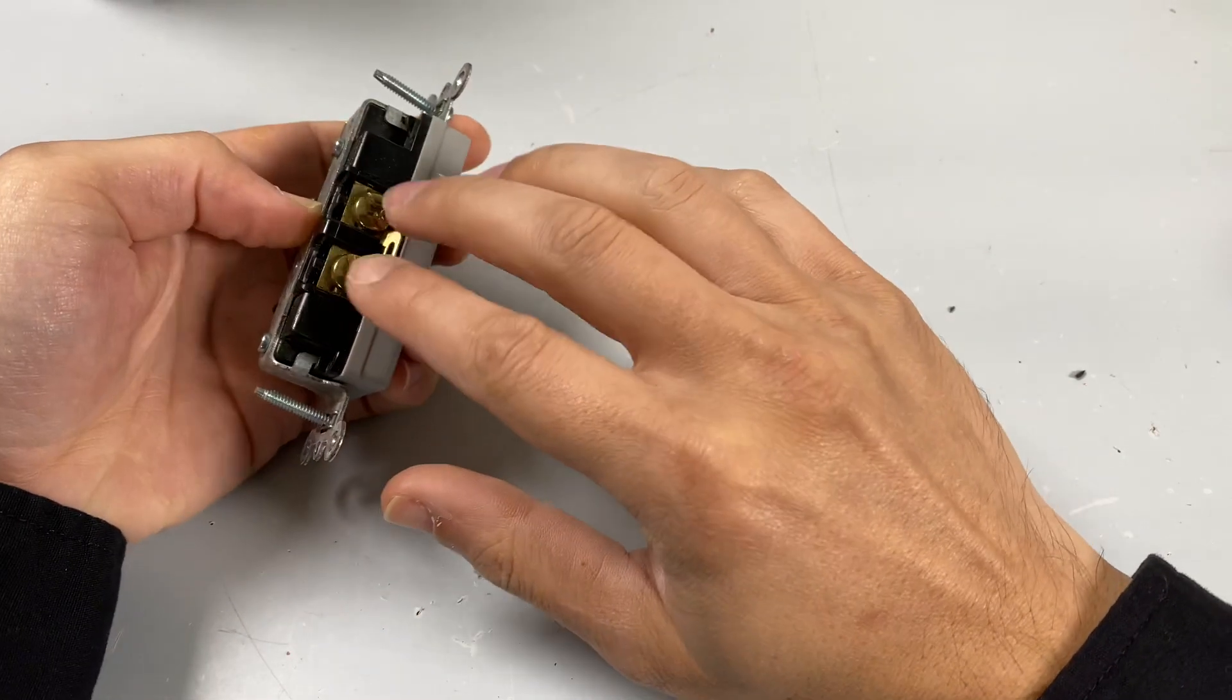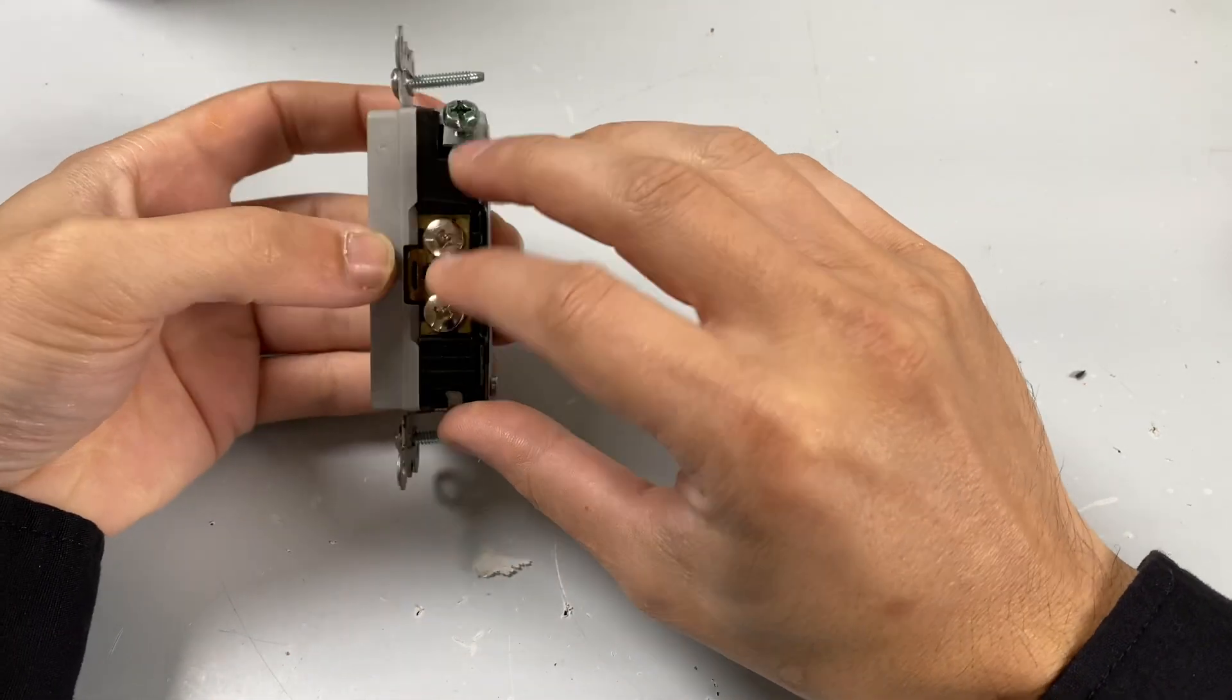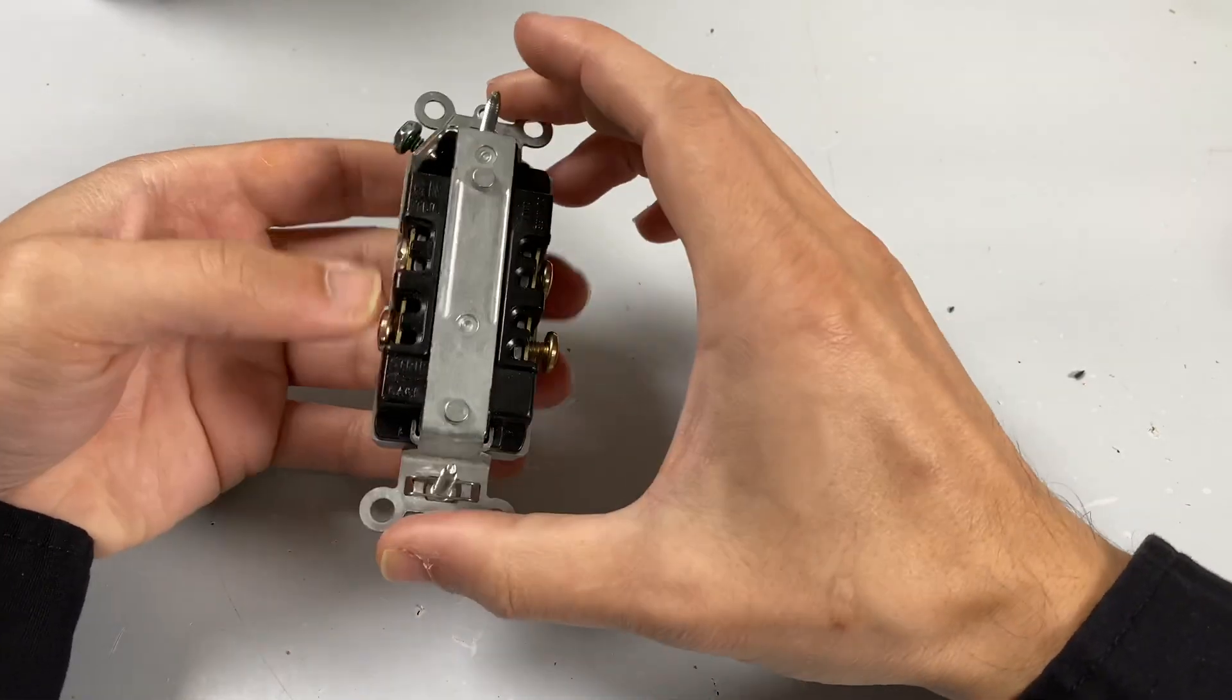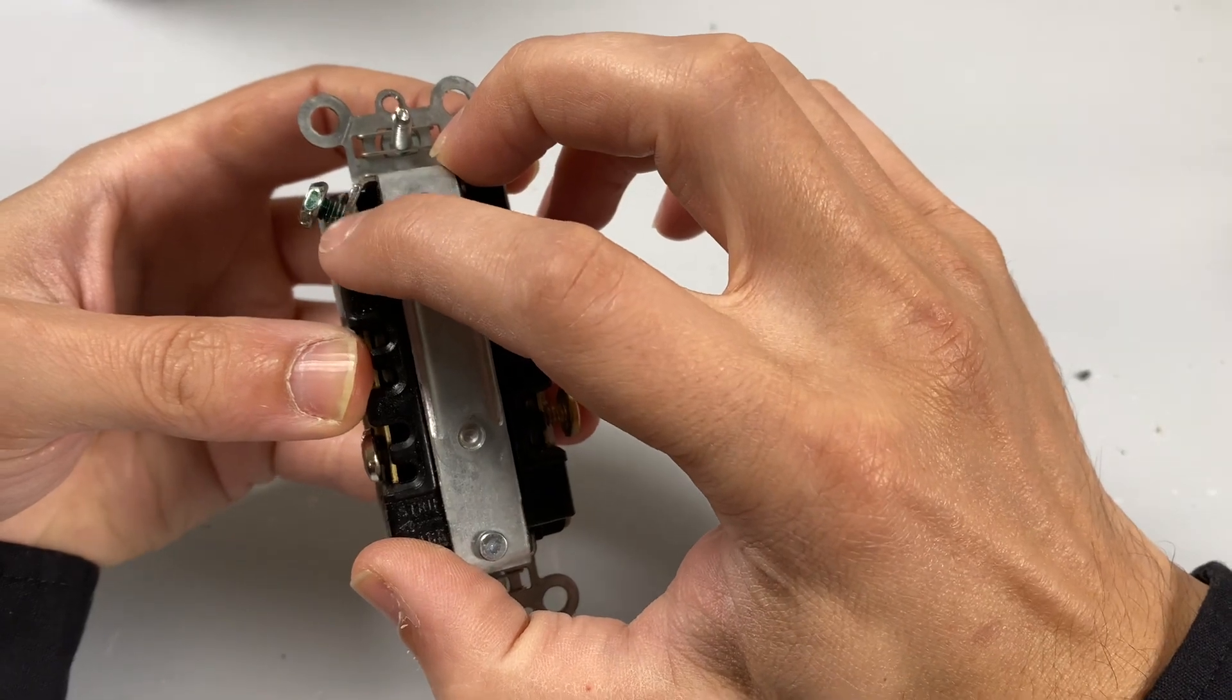Looking at its construction, you have your two hot terminals that are right here, you have your two neutral terminals right here, and then you have your ground. The strap that holds this connector in place has this ground screw that's tapped into it.